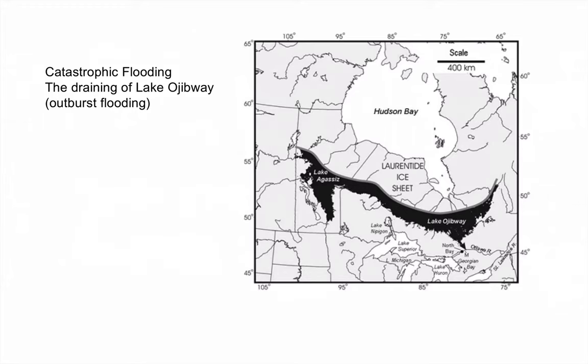Now I want to talk about some major catastrophic type floods. These don't happen every day, but this is a good example. About 10,000 years ago, as the last big glacier was retreating north back toward the North Pole and it melted, it created this huge lake. Where are you in the world? This is Canada. The United States is down here, here's the Great Lakes, and this is Lake Ojibwe — a massive lake created by meltwater from glaciers.